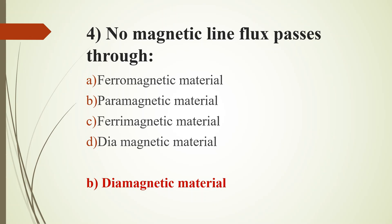Ferrimagnetic material has magnetic moments in opposite directions. Example: magnetite.